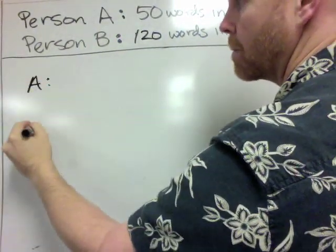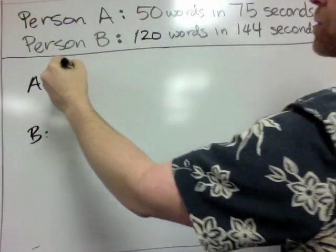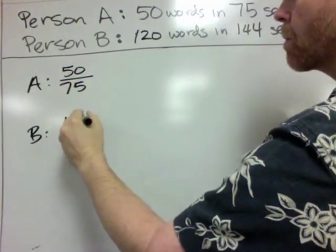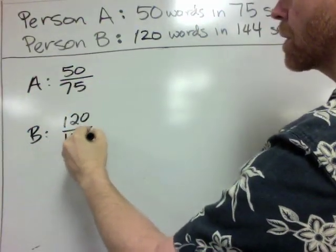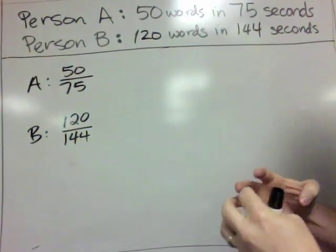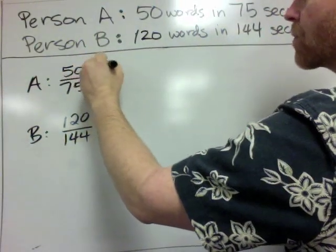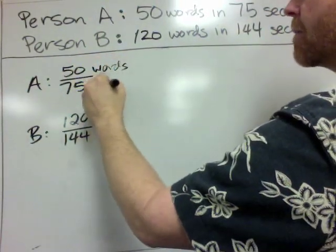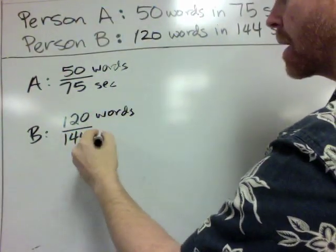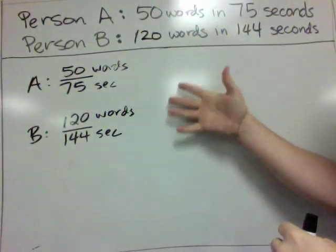So one way to do it, I'm going to show you three ways, but one way is to take both of their ratios and write them as a fraction. So we've got 120 over 144 down here, we've got 50 over 75 here. Now it's important to remember in ratios what these numbers mean. 50 stands for 50 words, and 75 stands for seconds. 120 words, and this is 144 seconds.